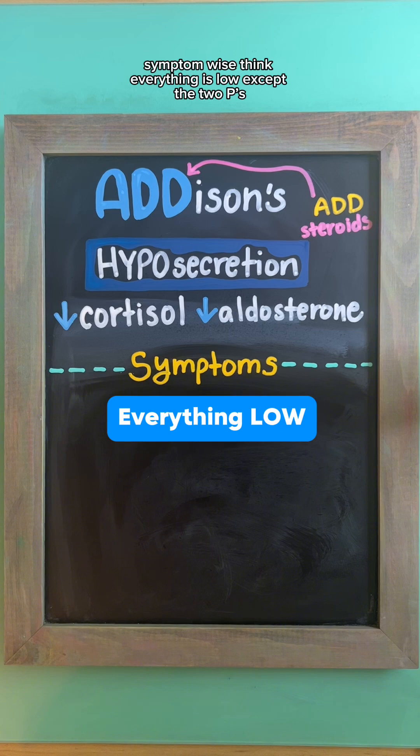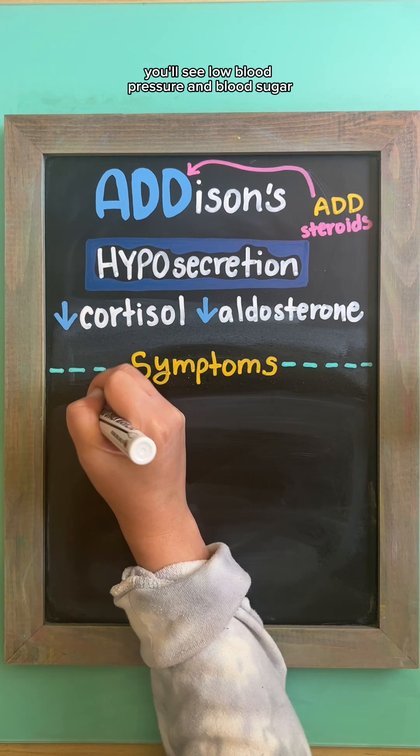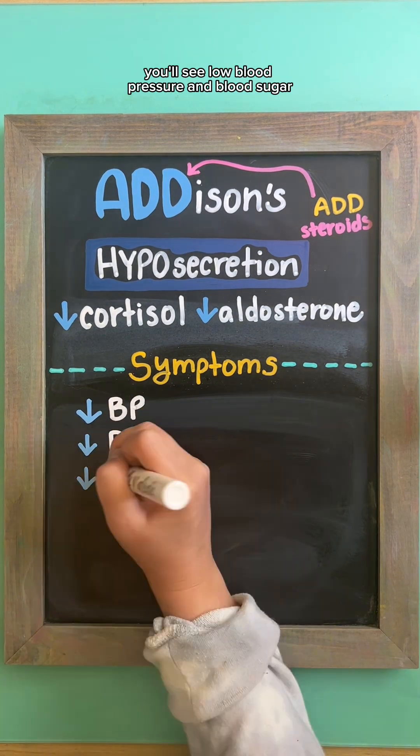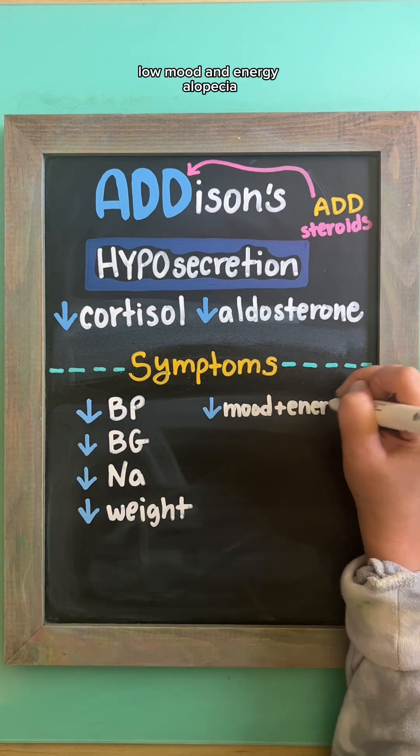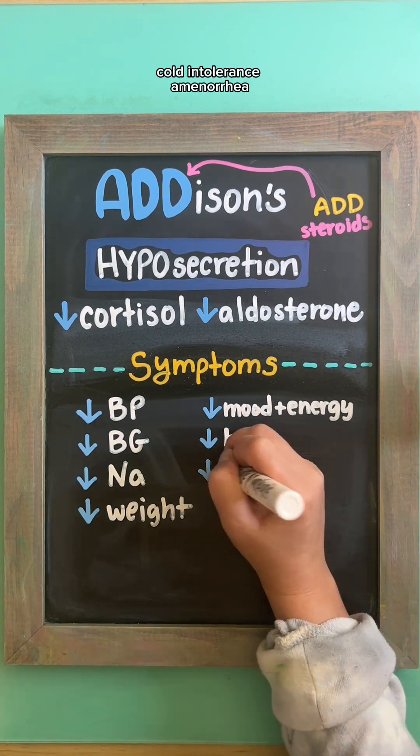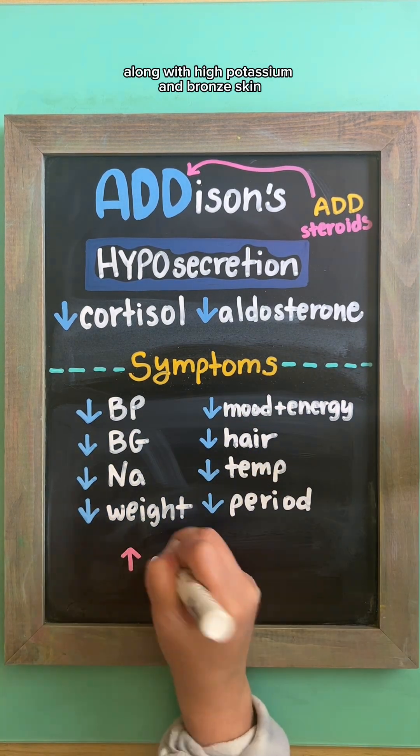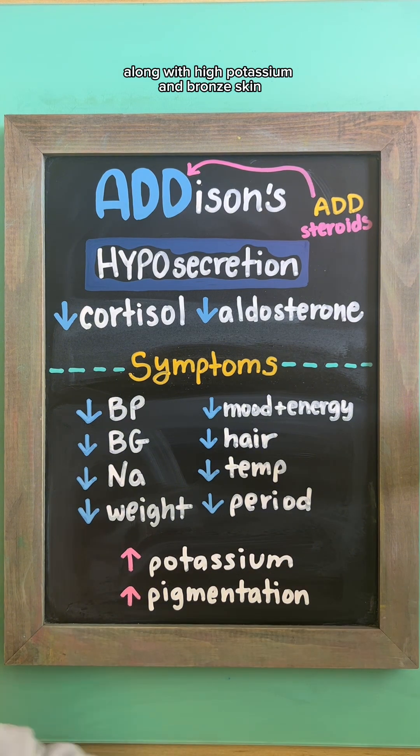Symptom-wise, think everything is low except the two keys. You'll see low blood pressure and blood sugar, salt cravings, weight loss, low mood and energy, alopecia, cold intolerance, amenorrhea, along with high potassium and bronze skin.